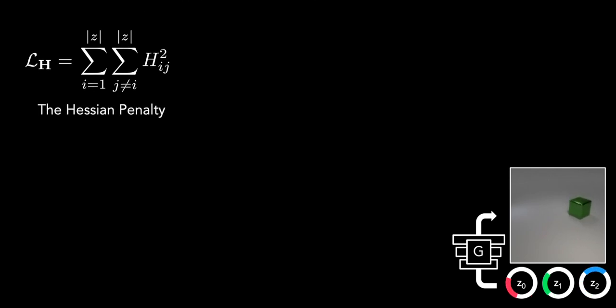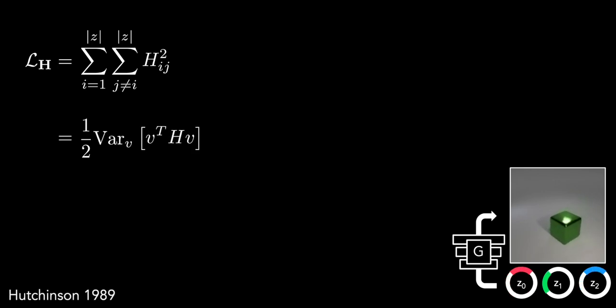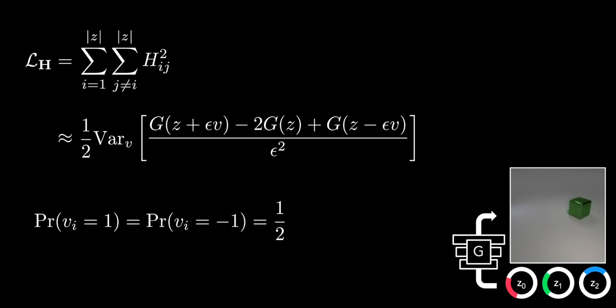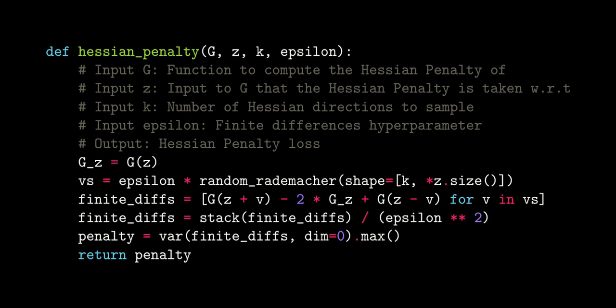It's reasonable to be concerned about the efficiency of computing anything involving a Hessian during training, but luckily it turns out that we can rewrite the loss term to be a variance over second directional derivatives using Hutchinson's estimator. Here the v vectors are random Rademacher vectors. These second directional derivatives can be quickly approximated with finite differences. Here's a PyTorch-style implementation of the Hessian penalty. It only takes a few lines of code to implement.